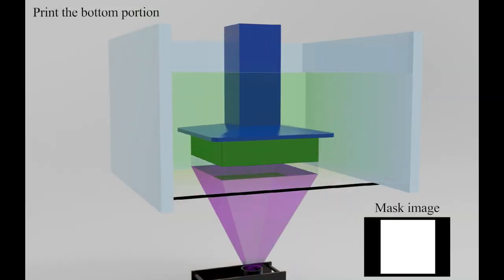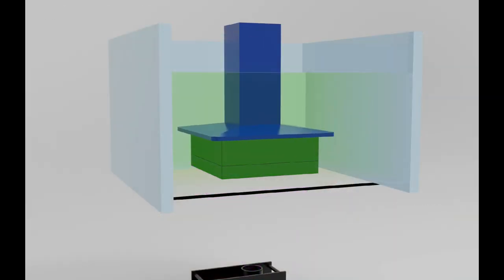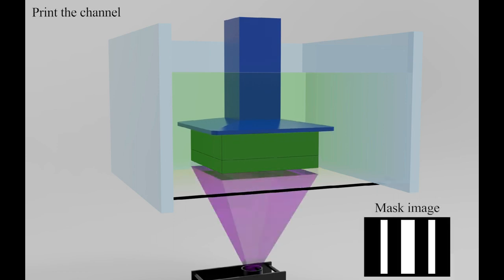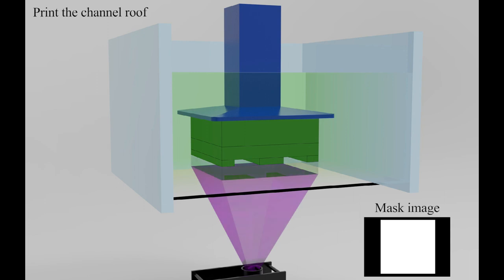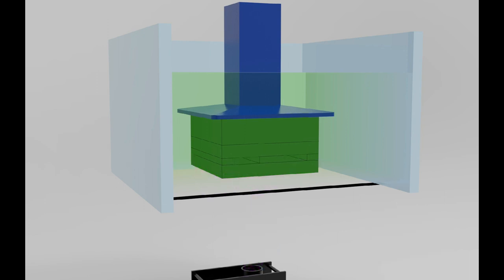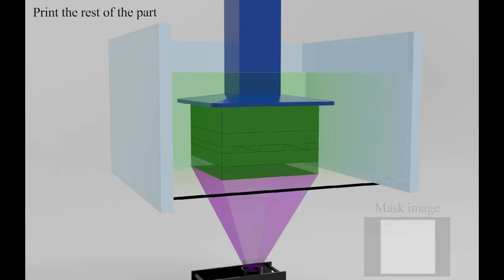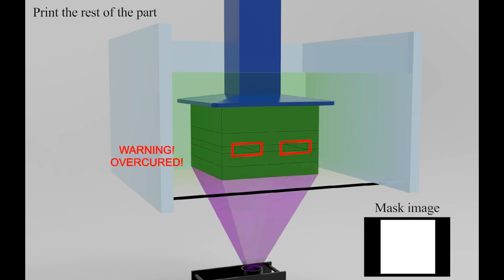However, current VPP has difficulty in achieving well-controlled micrometer-sized channels in the layer-building direction due to the over-curing issue. That is, the light radiation required to build the most critical channel roof layer and the subsequent layers will inevitably cure the residual resin inside flow channels, causing clogs.